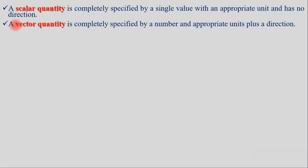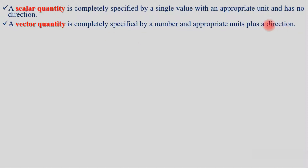A vector quantity is automatically associated with both a magnitude and a direction. The direction of a vector quantity is completely specified by a number with appropriate units and a direction, such as plus or minus grades.